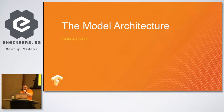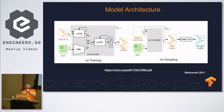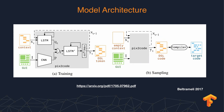Looking at the model architecture, we have a CNN and an LSTM going into another LSTM that predicts our domain-specific language tokens. During inference, we put in the image itself and rely on it to extract features, feeding into the LSTM to make our config file.